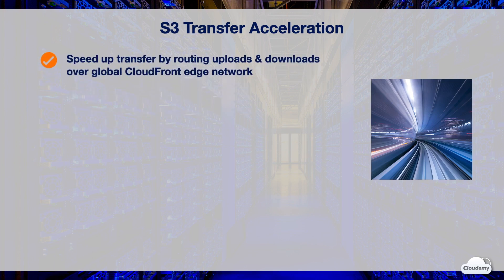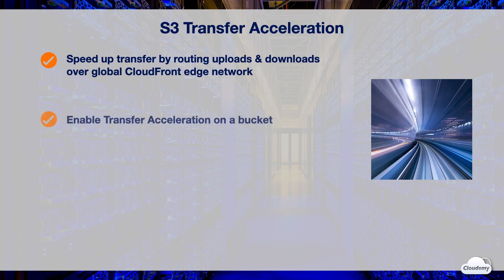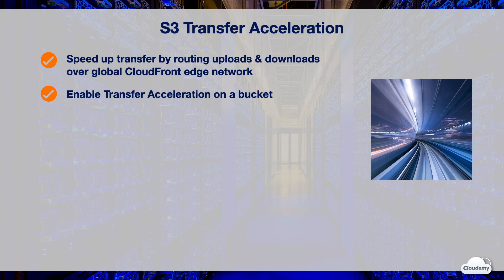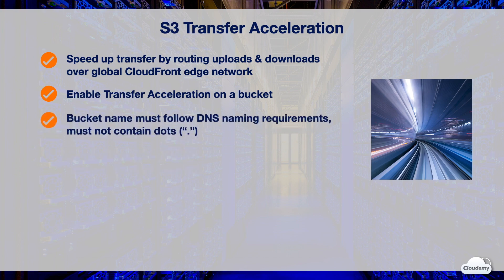S3 Transfer Acceleration uses the globally distributed CloudFront edge network. It speeds up transfer by routing uploads and downloads over the global edge network. Transfer Acceleration is effective at minimizing or eliminating the latency caused by the geographic distance between globally dispersed clients and a regional application using S3. You can enable Transfer Acceleration on a bucket, but the bucket name must conform to DNS naming requirements and must not contain any dots.